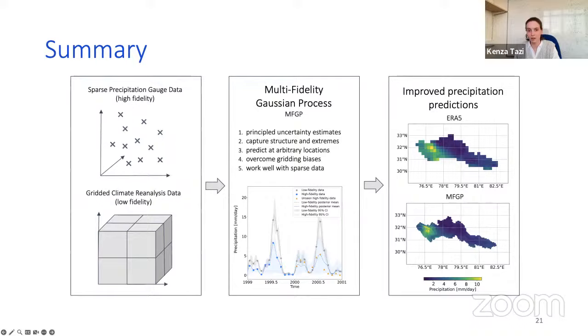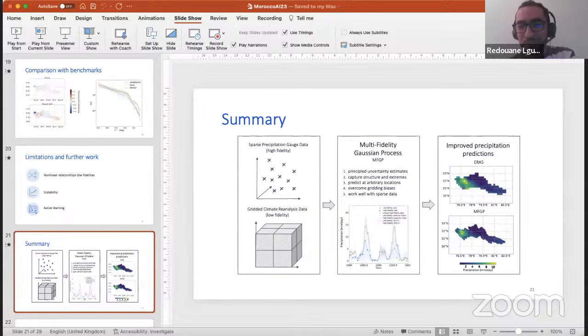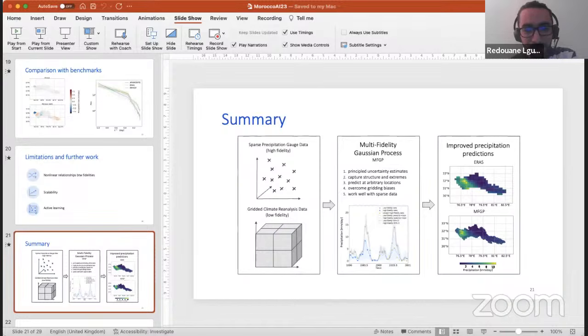So we've seen it's possible to use multifidelity Gaussian processes to combine sparse precipitation gauge data with that of less accurate climate model or reanalysis data. We are creating a product that better captures structure and extremes, that can predict at arbitrary locations and overcomes gridding bias. It also works with sparse datasets. And most importantly, it can give us principled uncertainty estimates. I'll be releasing a full 30 year dataset for this area soon, taking a small step towards helping the most vulnerable communities adapt to humanity's greatest challenge. Thank you for listening. And I'm very happy to take questions now. Thank you very much, Kenza, for the great presentation.